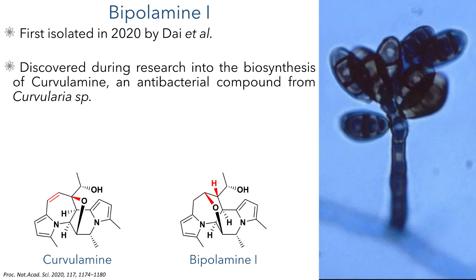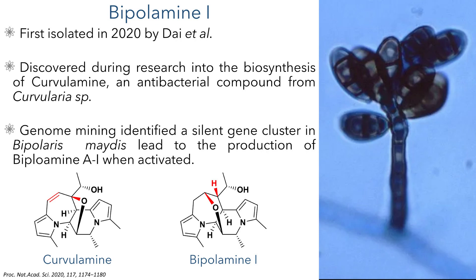Bipolamine I was first reported in 2020 by Dai et al., and it was discovered during their research into the biosynthesis of Curvulamine, an antibacterial compound isolated from the Curvularia fungus. Bipolamine I was not naturally present in these fungal extracts; however, genome mining identified a silent gene cluster that, when activated in Bipolaris Medus, led to the production of the Bipolamine family of compounds.